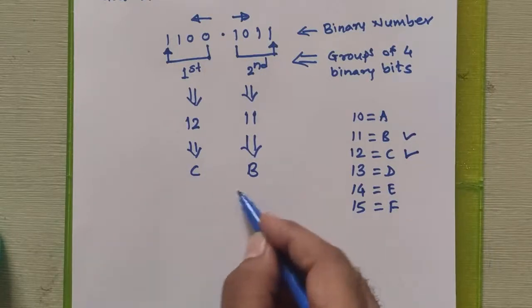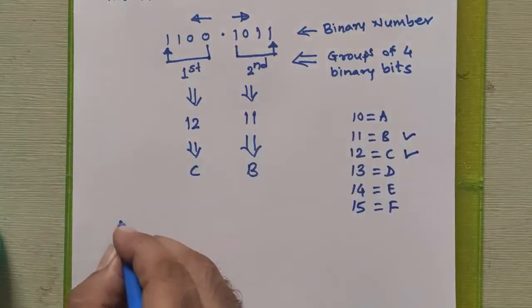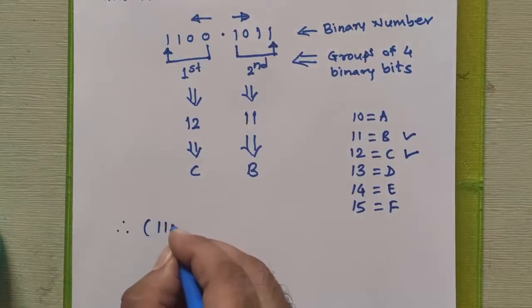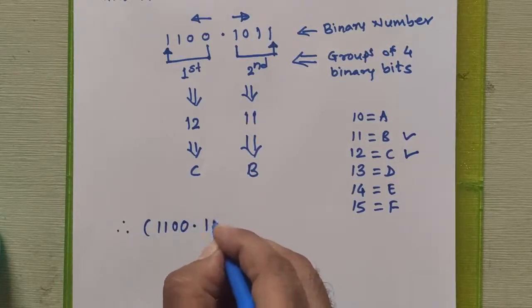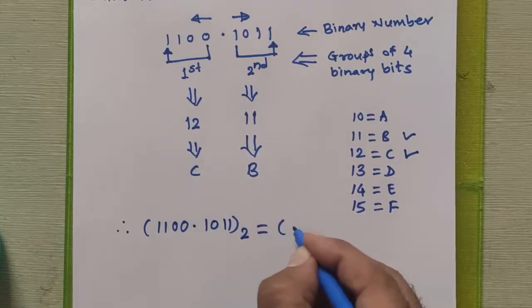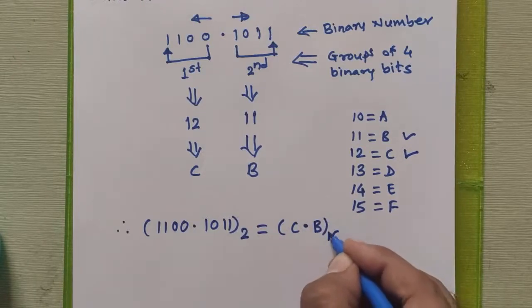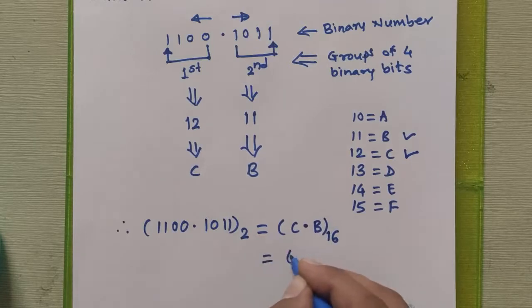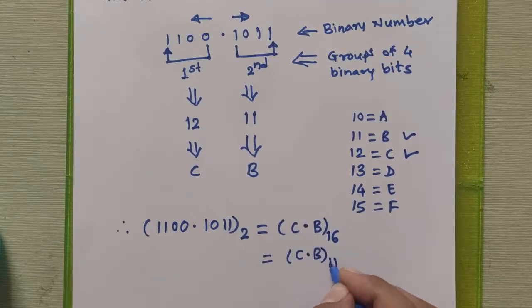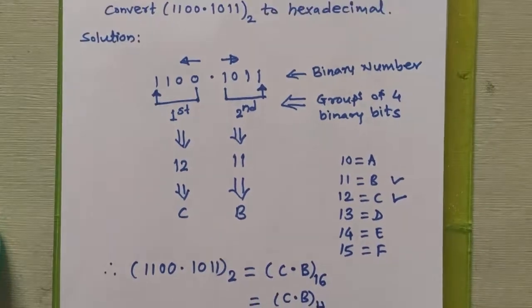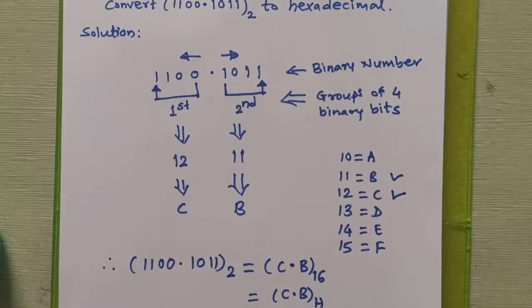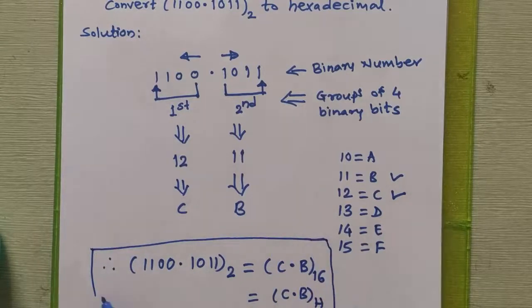So we obtained the hexadecimal equivalents for these groups. Therefore, we can say that 1100.1011 in binary equals C.B in hexadecimal, also written as C.BH where H represents hexadecimal. This is the process we follow to convert any binary number to hexadecimal. Thank you.